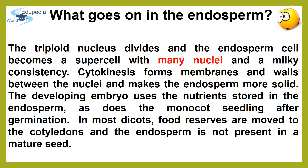Subsequently, cytokinesis forms membranes and walls between the nuclei and makes the endosperm more solid. Endosperm may either be completely consumed by the developing embryo before seed maturation, as in pea, groundnut, and beans, or may persist in the mature seed and be used up during germination, as commonly found in castor, coconut, etc.